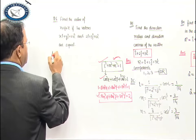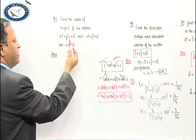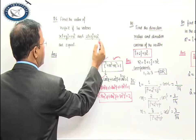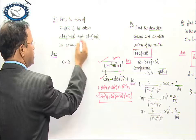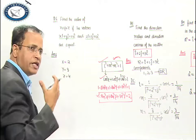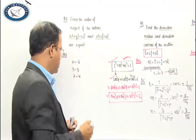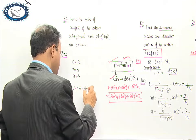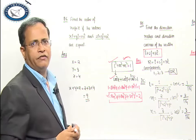When two vectors are said to be equal, we always take their corresponding components as equal. For example, find the value of x + y + z if two vectors are equal. That means x = 2, y = 3, z = 4. So x + y + z equals 2 + 3 + 4, which is 9.